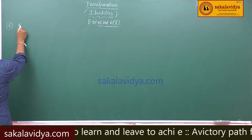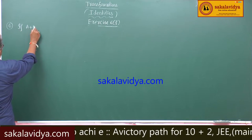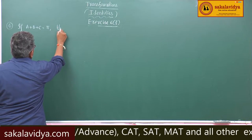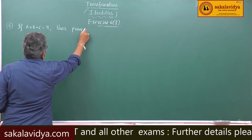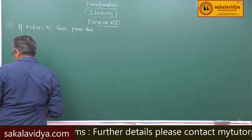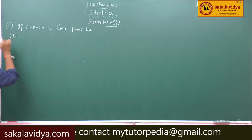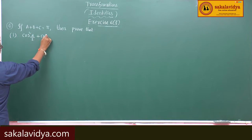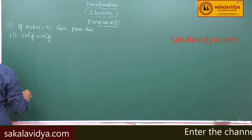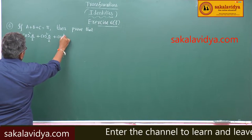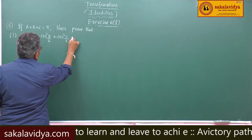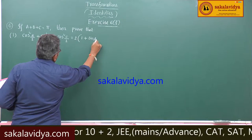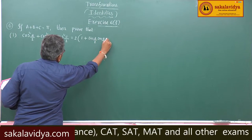Given that a plus b plus c is equal to pi, means 180 degrees. The first problem: cos squared a by 2 plus cos squared b by 2 plus cos squared c by 2 is equal to 2 into 1 plus sin a by 2 sin b by 2 sin c by 2.